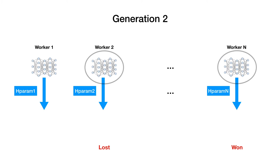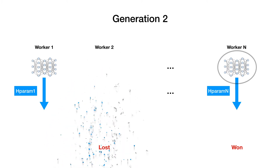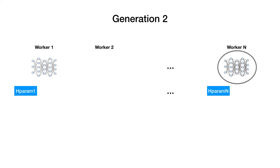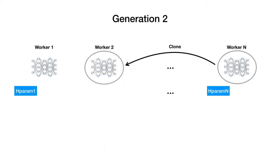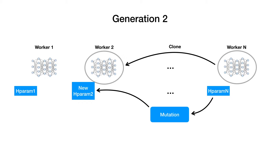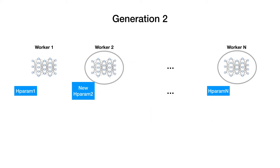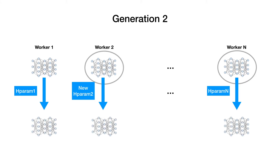For the next generation, those workers who have lost in a competition will discard their model and hyperparameters. The worker who lost will copy the model weights from the winner's worker, and also use a mutated version of the winner's hyperparameters as a new set of hyperparameters for the next generation. All of the workers will resume training using the new hyperparameters and new model weights. The binary tournament and mutation process are repeated from generation to generation until the convergence of the whole population.